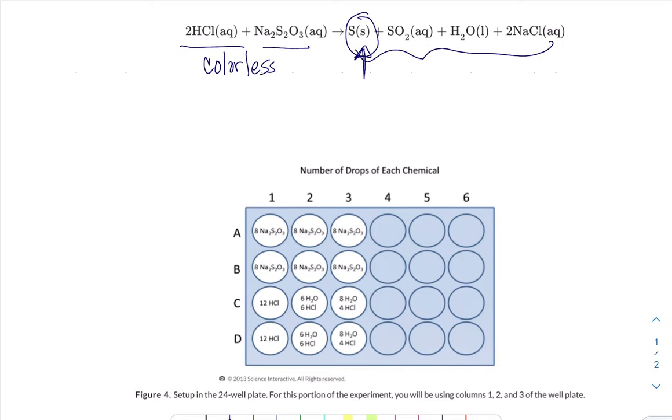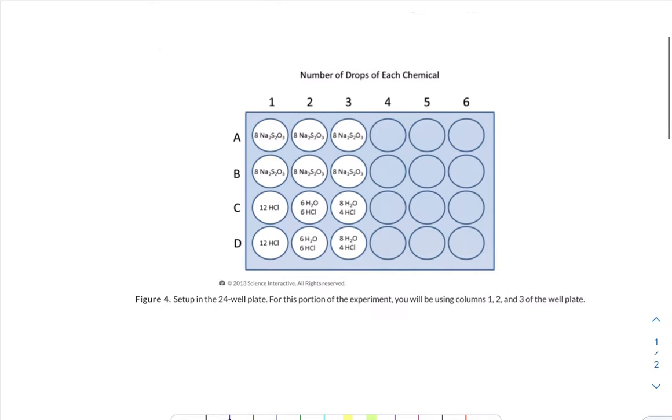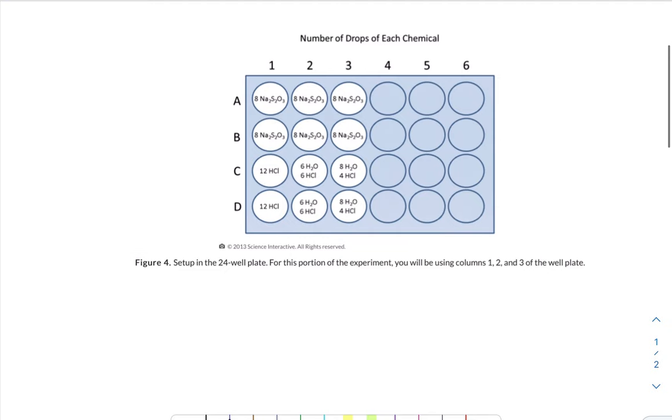When this X becomes invisible because the yellow solid has precipitated out and obscured it, you're going to call time and say the reaction is finished at that point. This is what the spot plate looks like for you to run your reaction. Please double check the number of drops of each, because sometimes Science Interactive changes something in an experiment and I always find out about it after the fact.